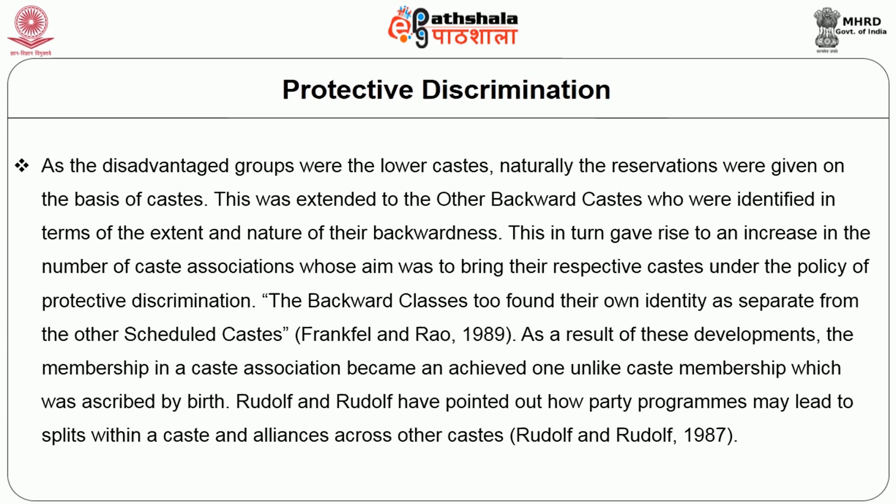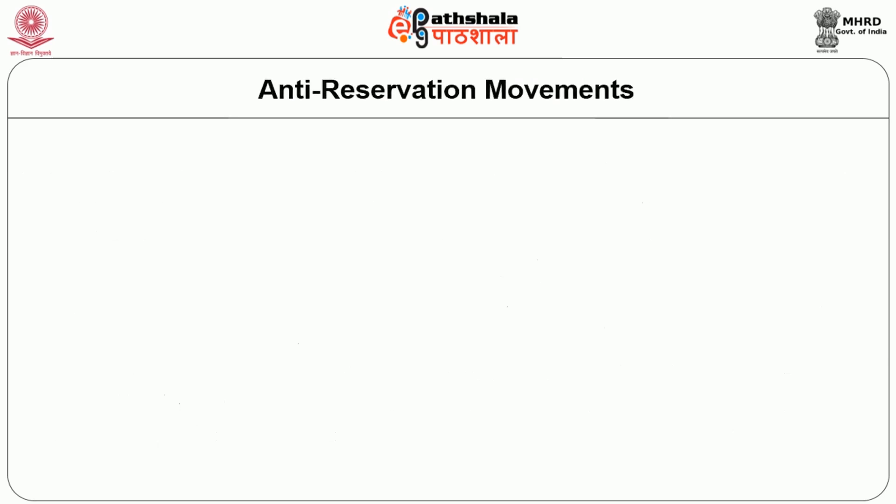The backward classes also found their own identity as separate from the other scheduled castes. As a result of these developments, membership in a caste association became an achieved one, unlike caste membership which was ascribed by birth. Rudolf and Rudolf have pointed out how party programs may lead to splits within a caste and alliances across other castes.